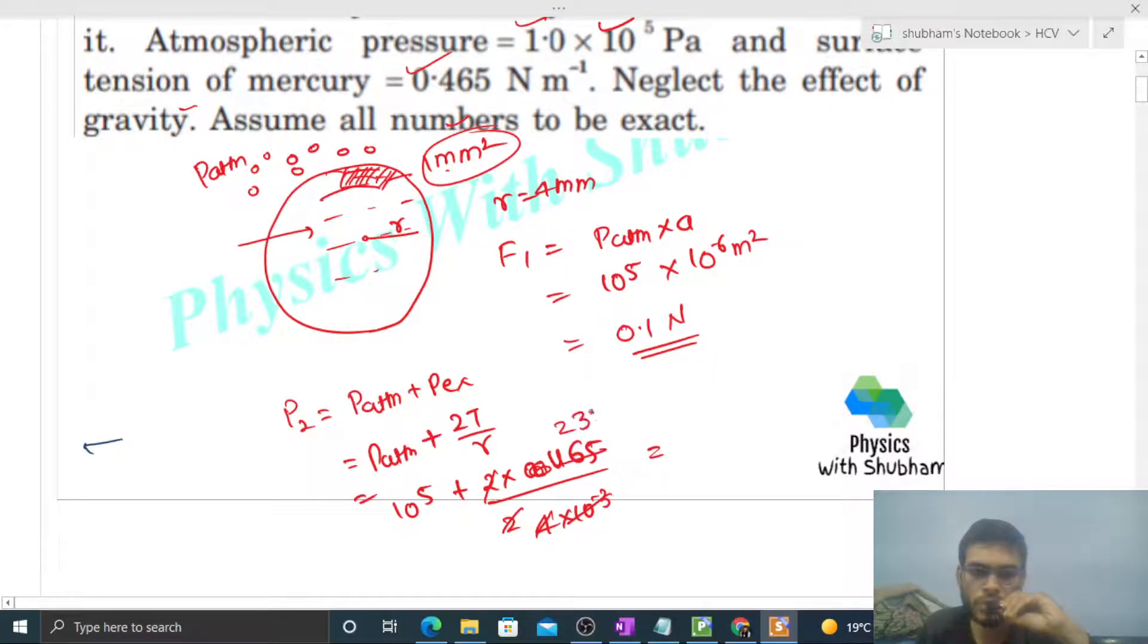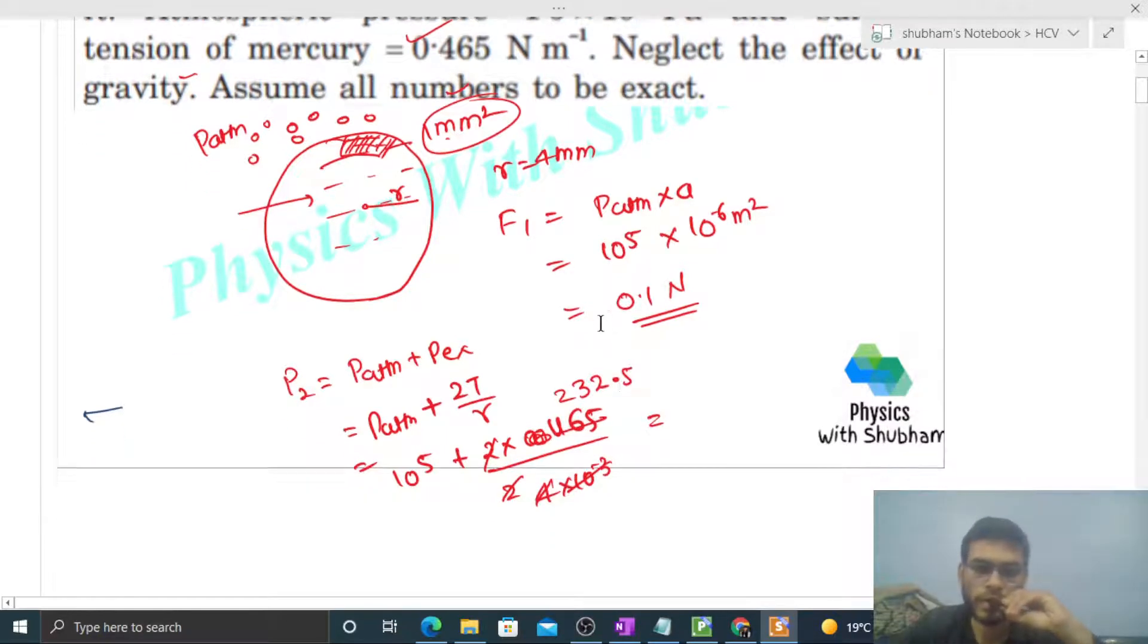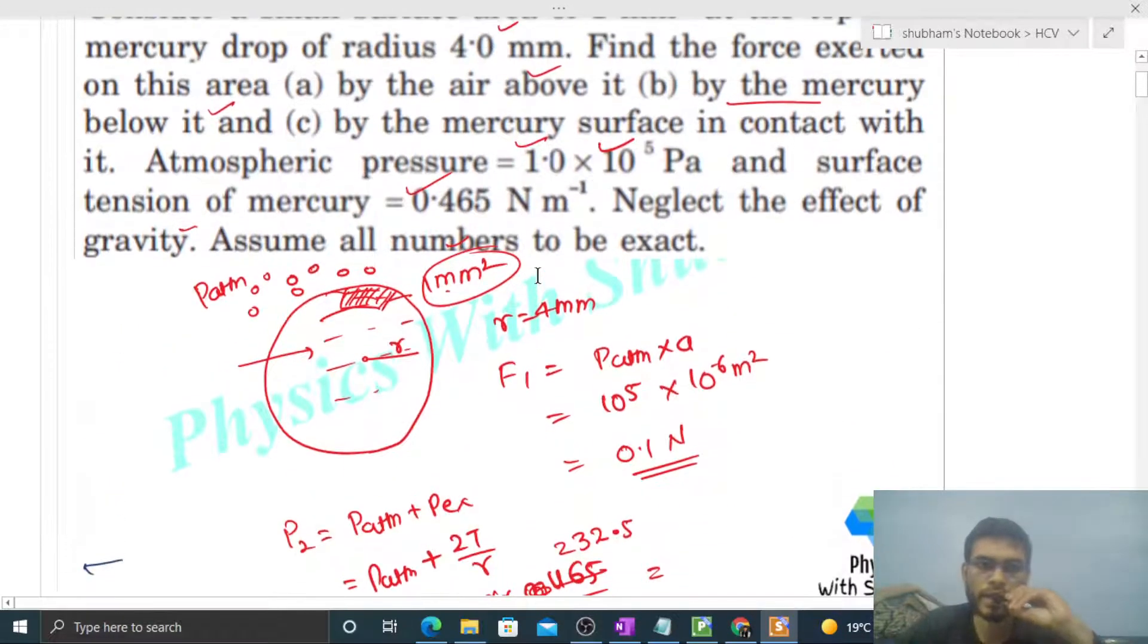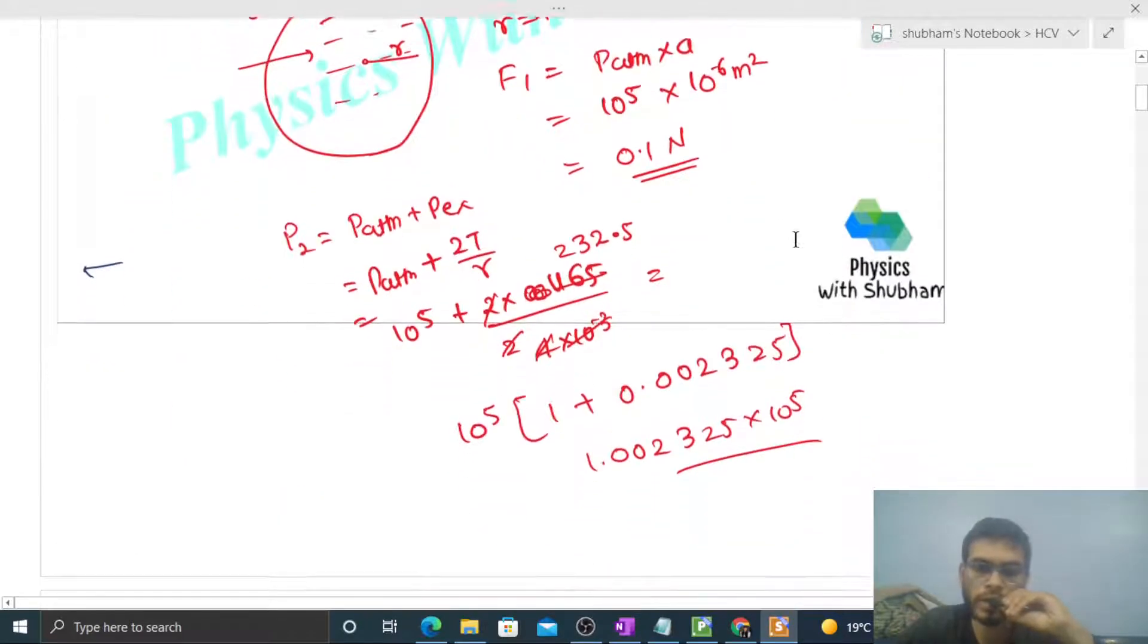It becomes 2.5. So simplify this. Let me take 10⁵ outside, so 1 plus 0.002325, right? So it will be 1.002325 × 10⁵. You don't have to take approximation - assume all numbers to be exact, right? So keep the values as it is. So this is the value of pressure inside the drop.